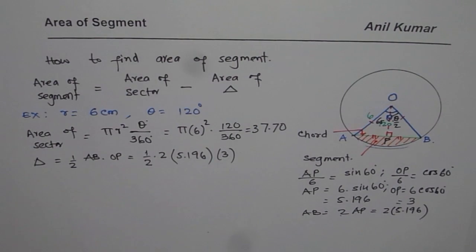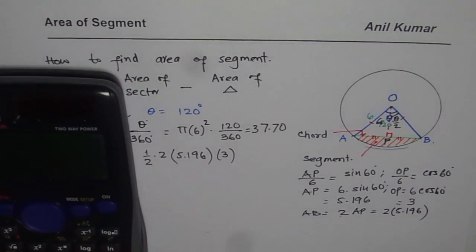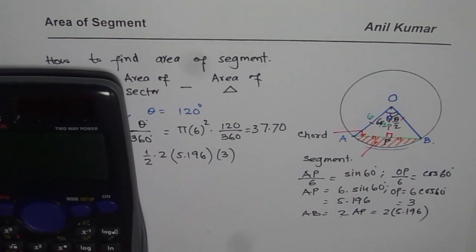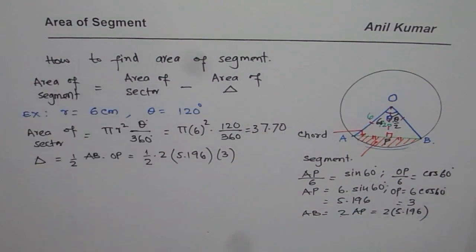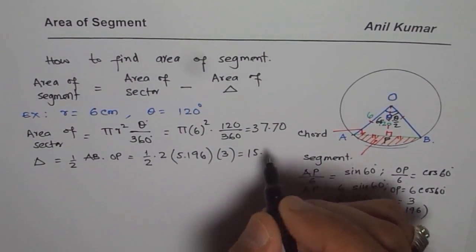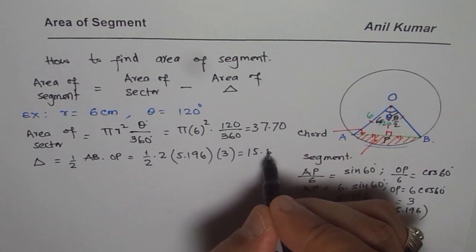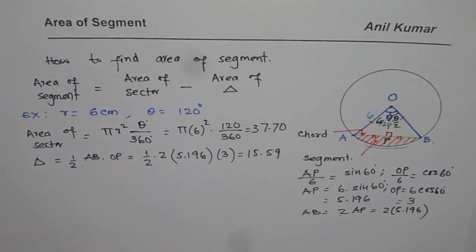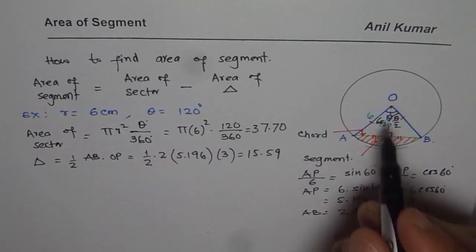So 2 and 2 cancels. So we get 3 times 5.196, which is in decimals 15.588. So that becomes the area of the triangle.